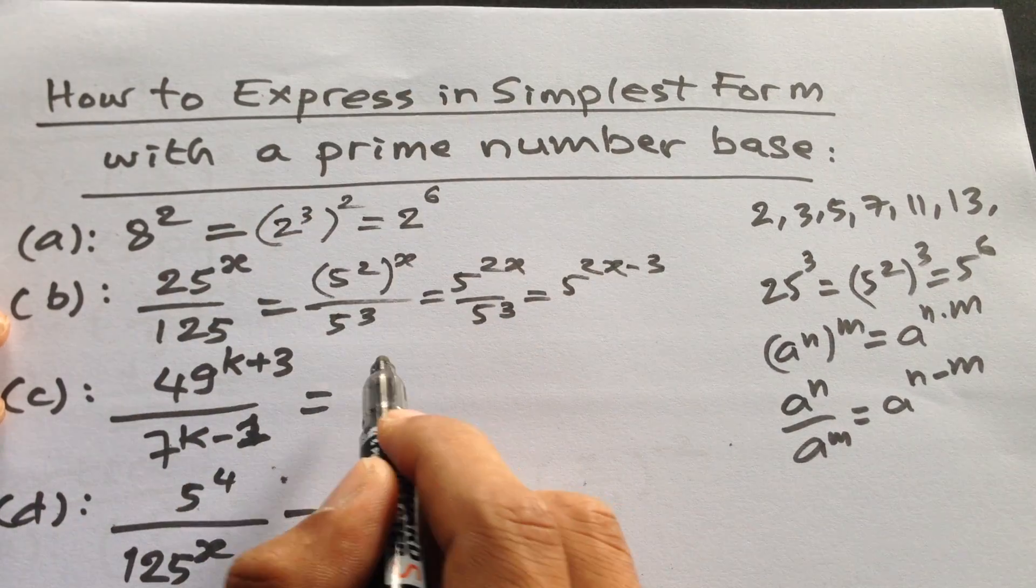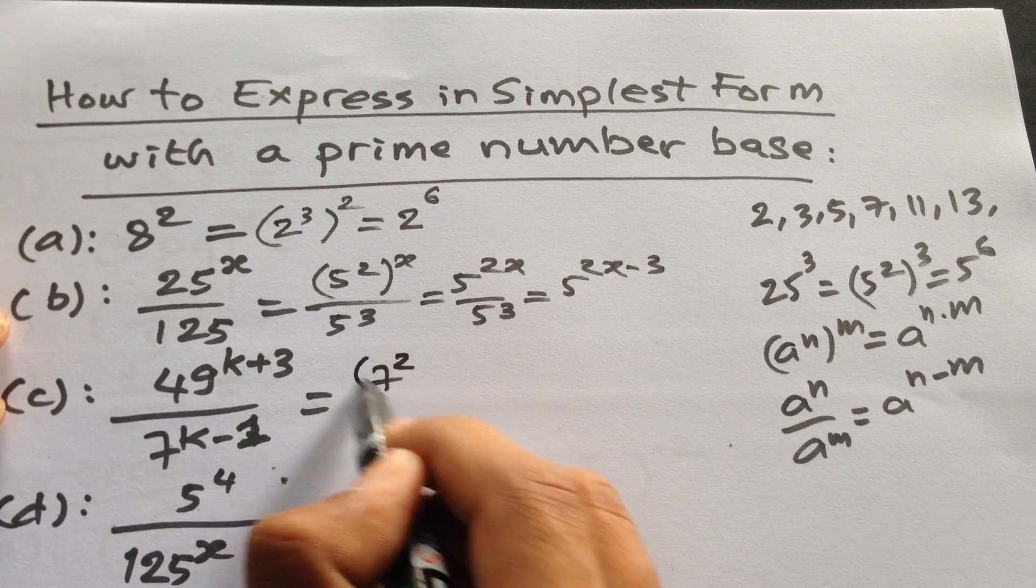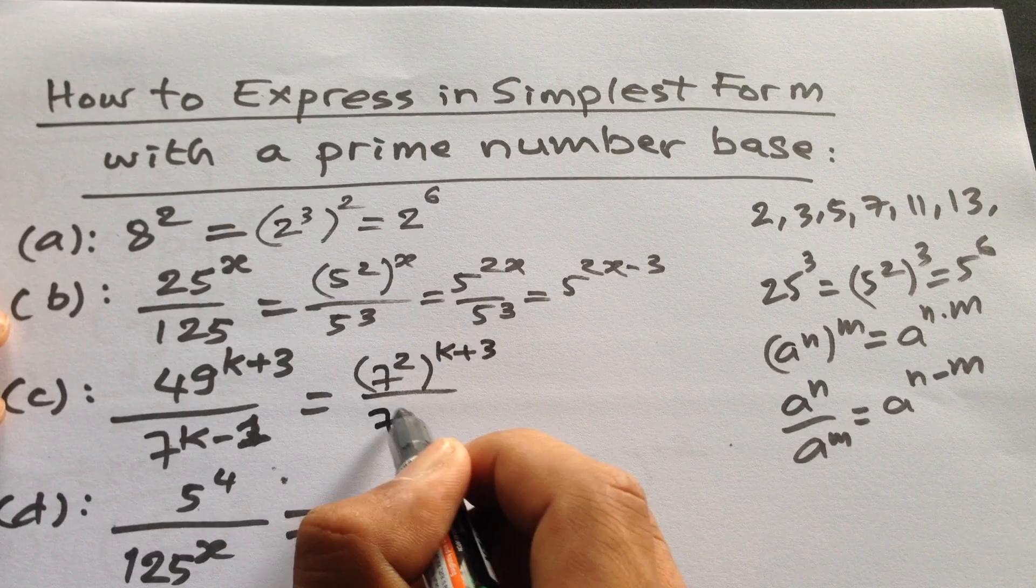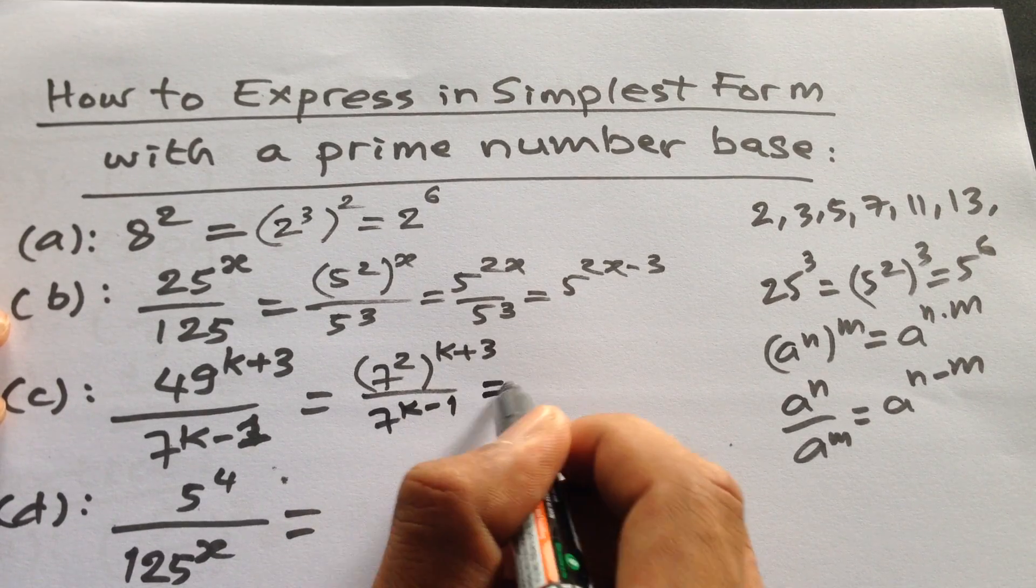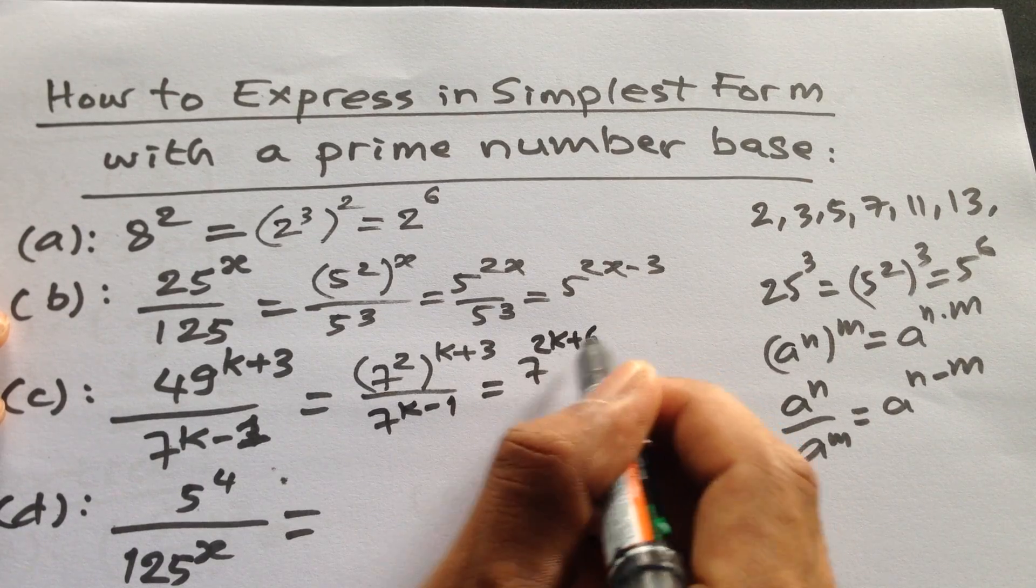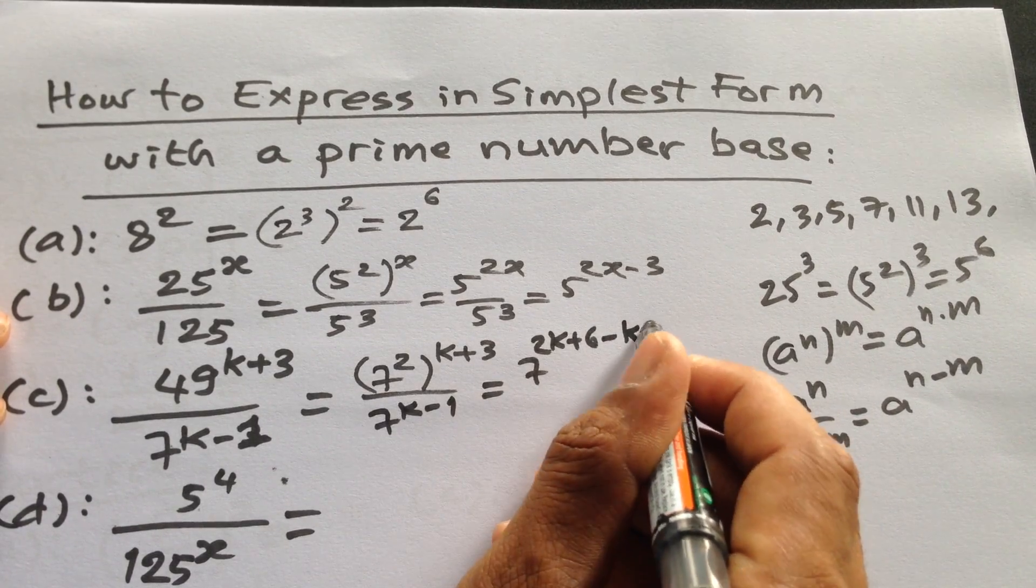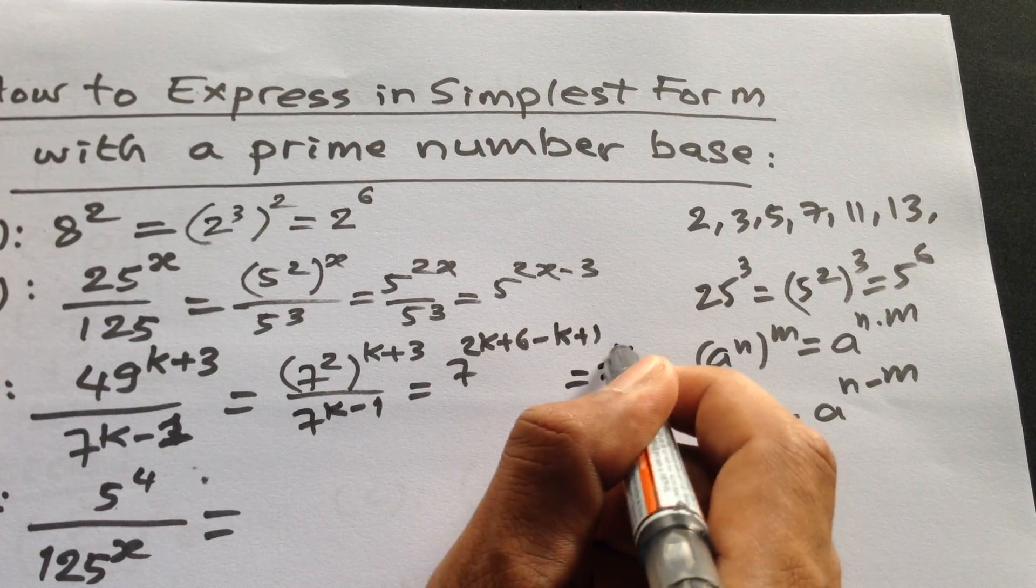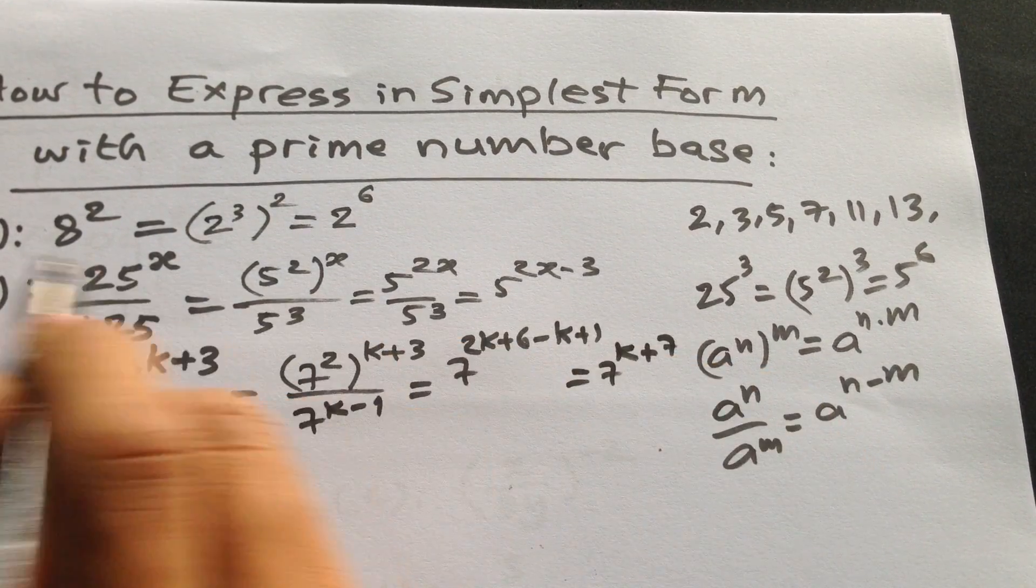For problem (c), we have 7 squared to the power k+3 divided by 7 to the power k-1. This becomes 7 to the power 2k+6 divided by 7 to the power k-1, which equals 7 to the power k+7.